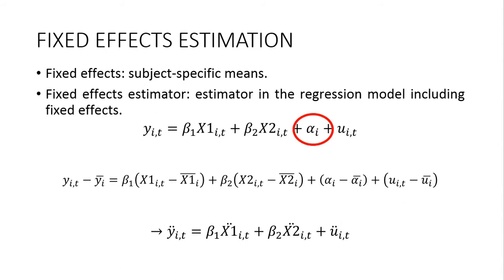In general, fixed effects stand for subject-specific means, and the fixed effects estimator is an estimator in a regression model that includes fixed effects. In our case, alpha_i is such a fixed effect — an unobserved, time-invariant variable. The interesting property of this variable is that at any period of time its value is equal to the average value for the entire period.